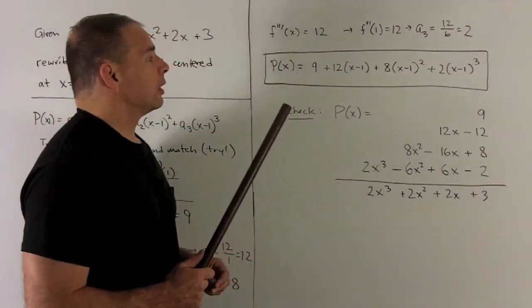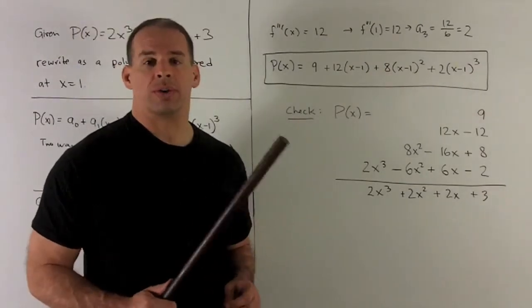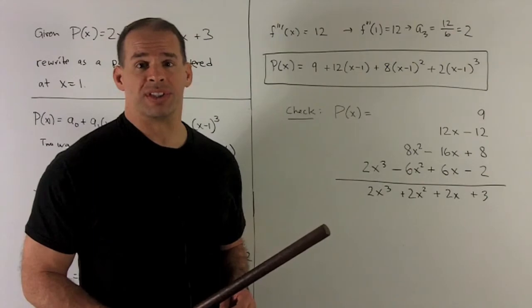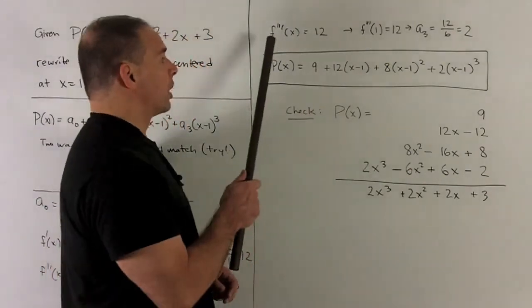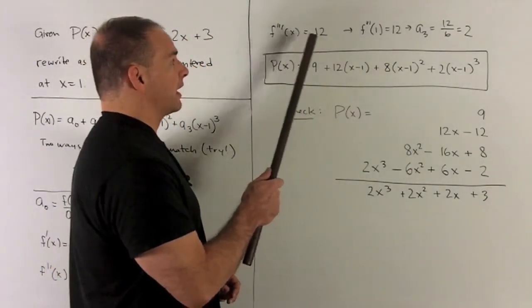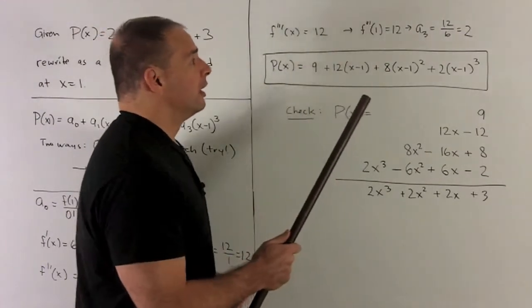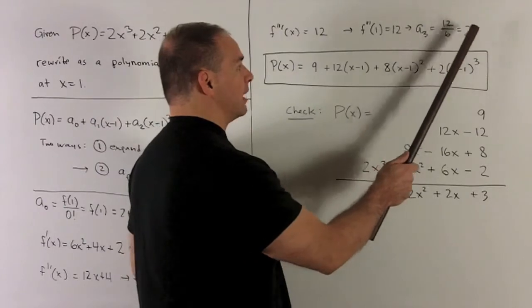For our last one, we're going to go for a₃, which is the third derivative of f evaluated at 1, divided by 3 factorial, which is 6. So we take our third derivative, that's just going to give me the constant 12. So if I put a 1 in there, put anything in there, I get 12. Then we divide by 6, and that gives me 2.